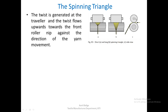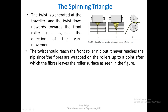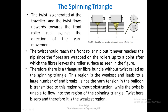Here we see the side view of the rollers showing two cases: a short spinning triangle and a long spinning triangle. From the side view, the fibre strand coming out of the front roller nip is making a wrap around the rollers. The twist should reach the front roller nip but it never reaches the nip since the fibres are wrapped on the rollers up to a point, after which the fibre leaves the roller surface. Therefore, there is a triangle fibre bundle without twist, called the spinning triangle.